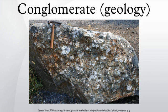Conglomerate is a coarse-grained clastic sedimentary rock that is composed of a substantial fraction of rounded to subangular gravel-sized clasts, e.g., granules, pebbles, cobbles, and boulders, larger than 2 mm in diameter.